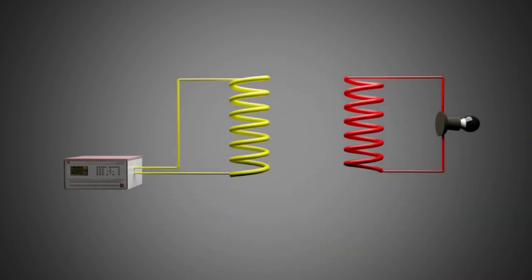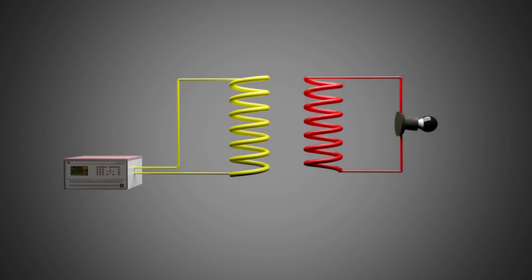The construction is very simple. To make a basic transformer, you need two coils and metal sheets. It works on the principle of mutual induction, therefore we should have two coils placed very close to each other.